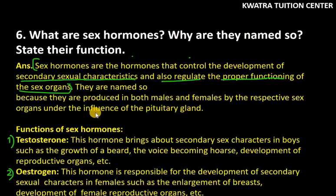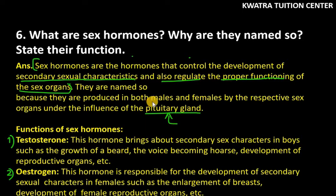Now, it says, why are they named so? They are actually named so because they are produced in both male and female by their respective organs under the influence of the pituitary gland. We know that our sex hormones are released by the pituitary gland. And the naming of sex hormones is based on the organ — male or female organs respectively.